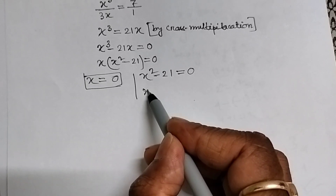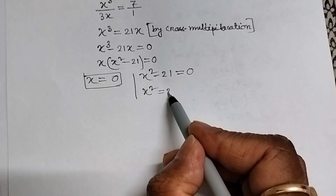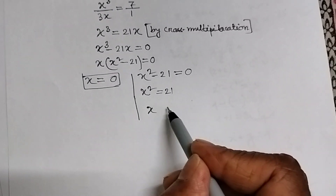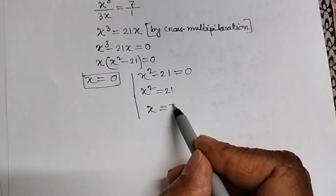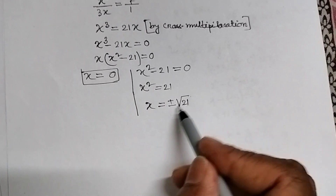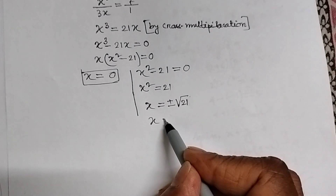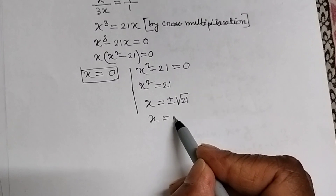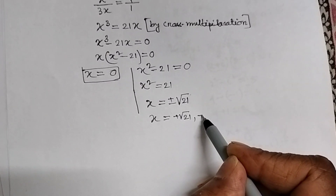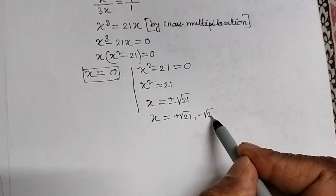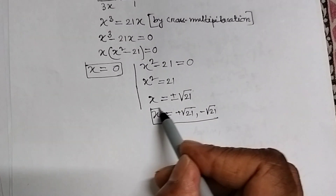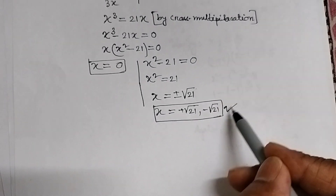From the second equation, we get x square equal to 21. Therefore, x equal to plus minus root over 21. So x equals plus root over 21, comma minus root over 21. This is another two solutions of the given equation.